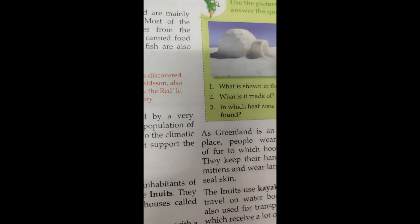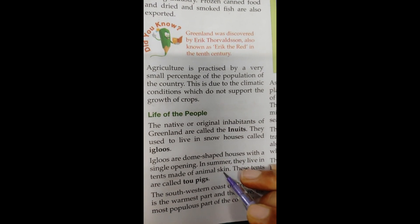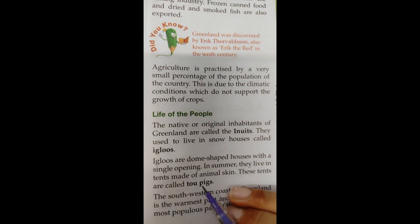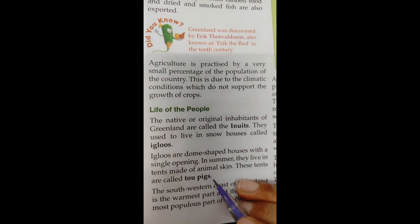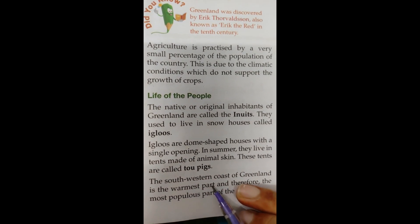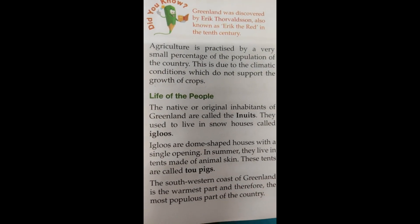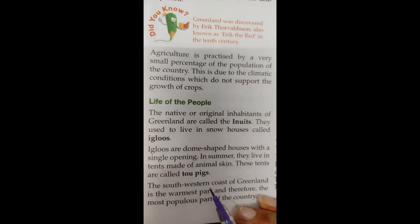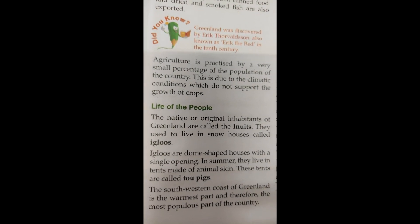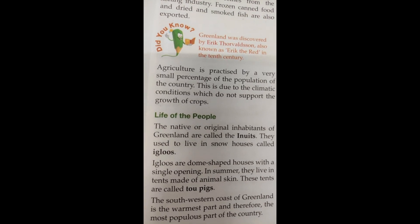In summers they live in tents made up of animal skin — because igloos would melt in summer as the ice gets melted. These tents are called toe pigs. The south western coast of Greenland is the warmest part and therefore the most populous part of the country — meaning the highest population lives there because the climatic conditions are comparatively better and people prefer to live there.